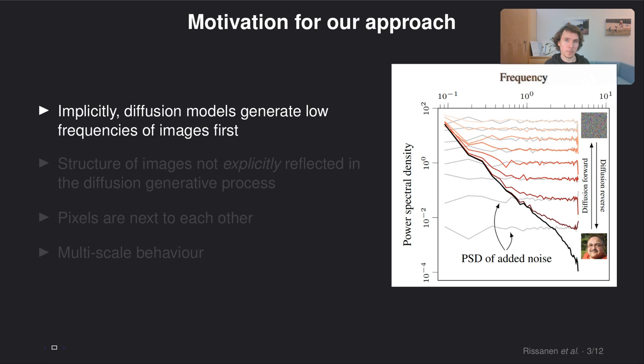Now it is well known that these diffusion models implicitly generate images such that the core structure is determined first and defined structure later on. In the paper we actually explain this or give an explanation to this using the power law nature of frequencies in images.